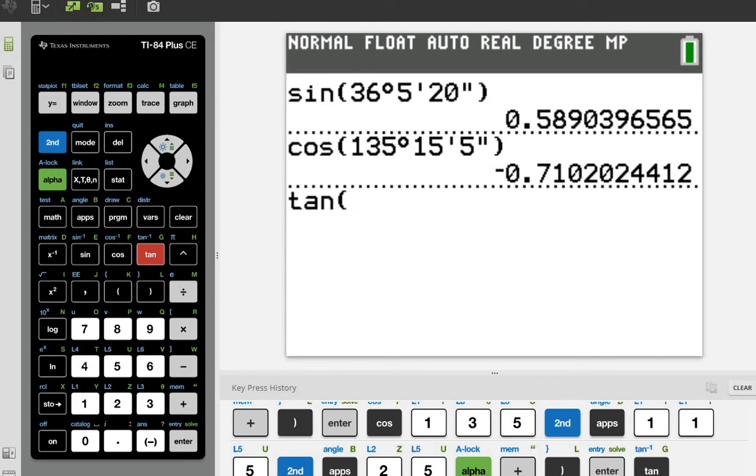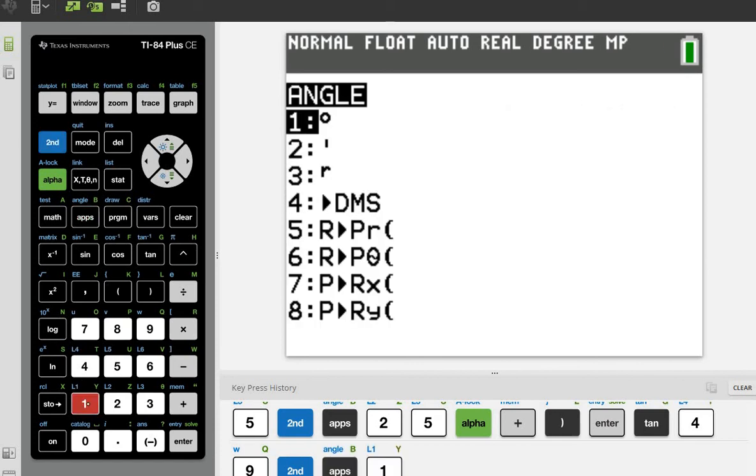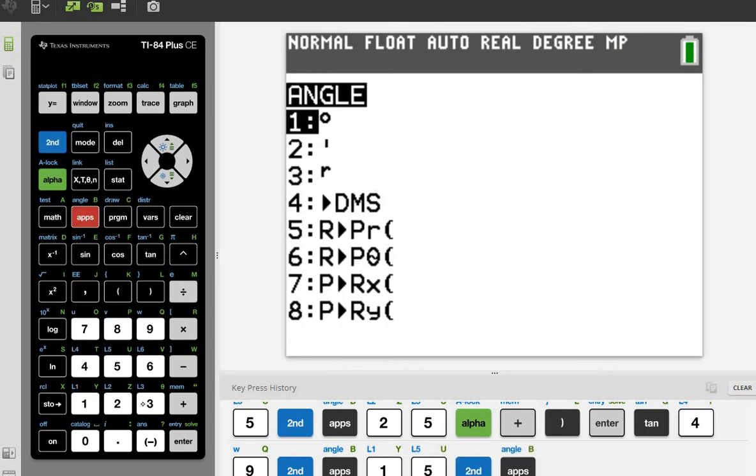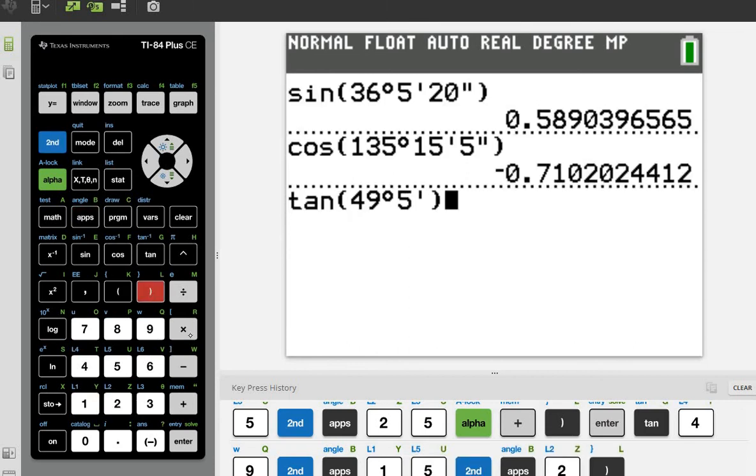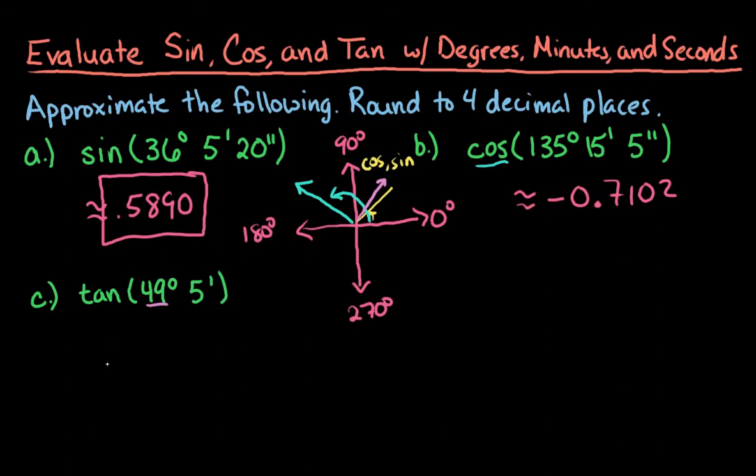So for tangent, we have 49 degrees. So I would just do second and apps, option one. And then I would do five minutes. So I would do my five, second apps, option two. And then I would just hit enter and 1.1538 is what I would round to approximately.